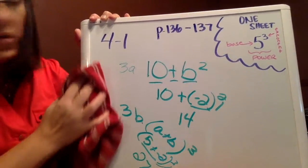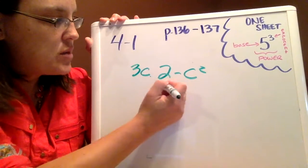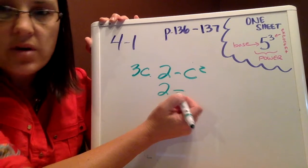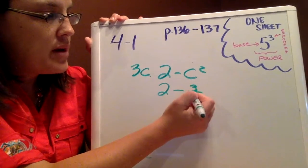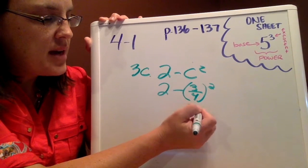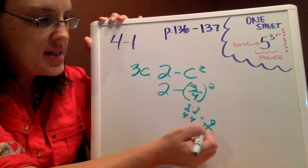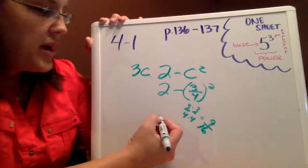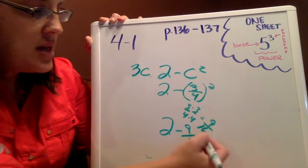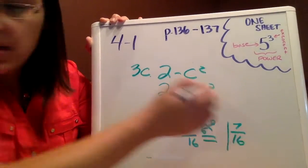For 3c, we have 2 minus c squared, and c is equal to three-fourths. So we're going to square three-fourths by taking 3 times 3 and 4 times 4 to get nine-sixteenths. So we have 2 minus nine-sixteenths, which is equal to 1 and seven-sixteenths.